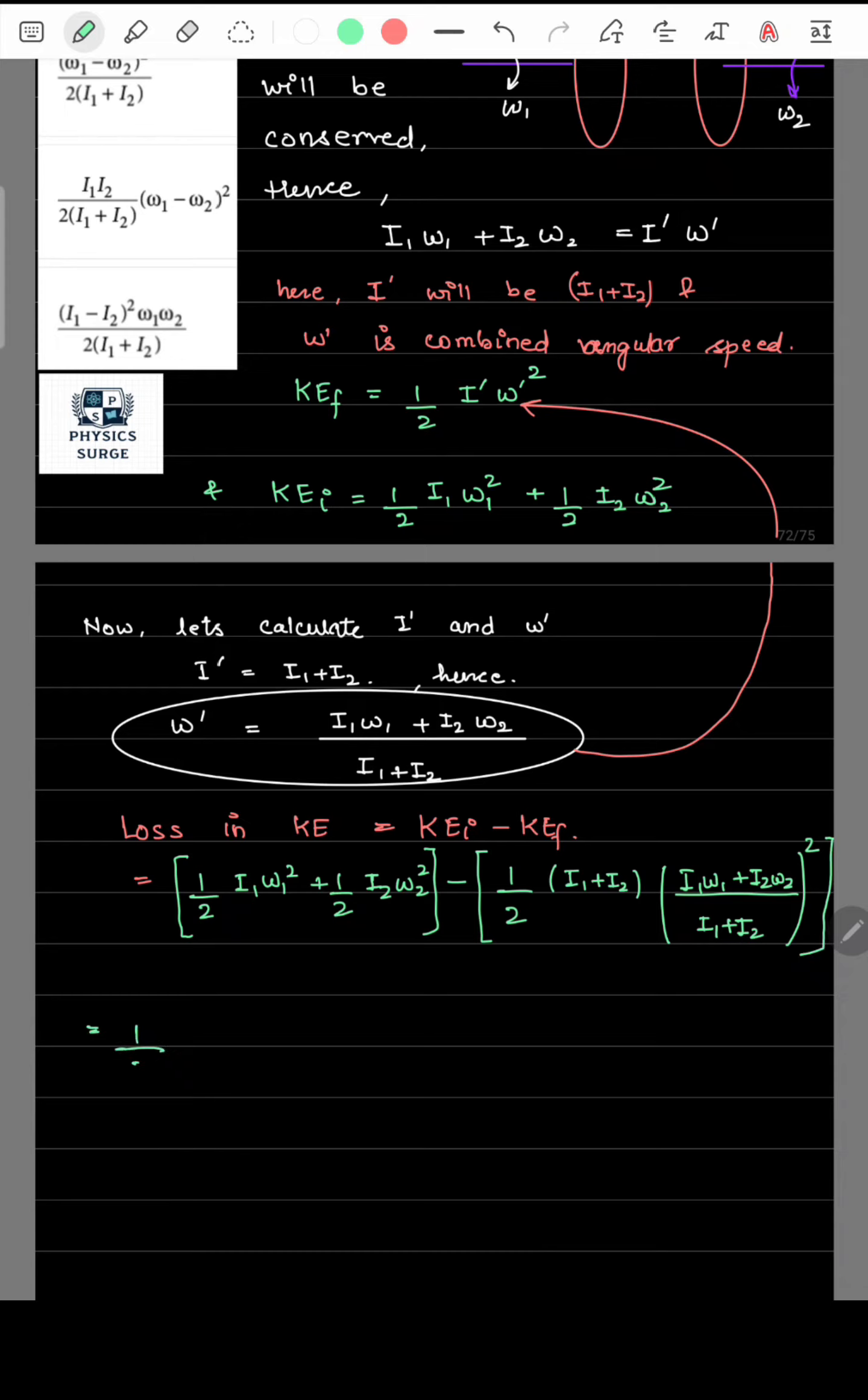We get this following. After further solving this expression, taking 1 by 2 as common, the i1 plus i2 gets cancelled out from the omega dash square and the moment of inertia. Taking i1 plus i2 as the LCM and further solving.